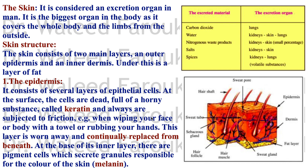The skin is considered an excretion organ in man — it's actually the biggest organ, covering the whole surface of the body. Looking at excreted materials versus excretion organs: CO2 is excreted by the lungs; water by the kidneys, skin, and lungs; nitrogenous waste products by the kidneys and skin; salts by the kidneys and skin; and spices or volatile substances by the kidneys and lungs.